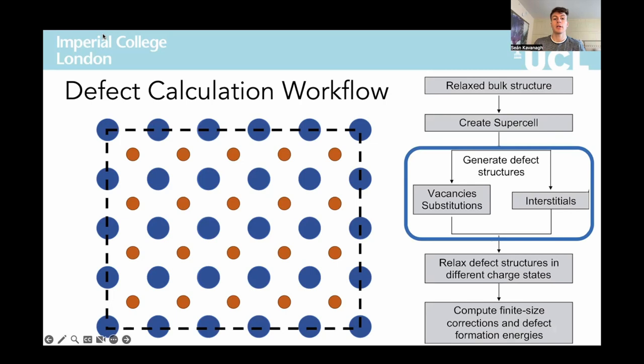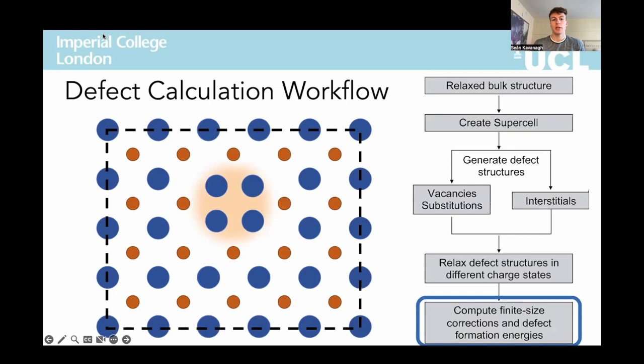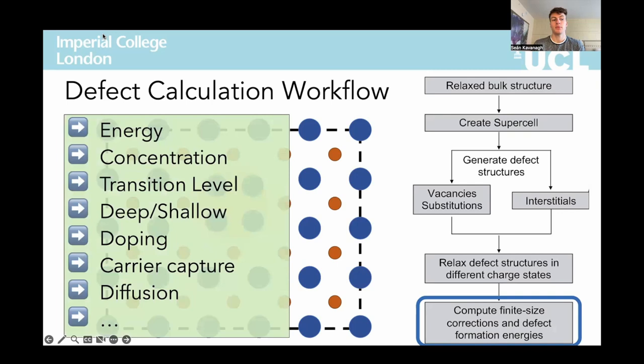For example, for a vacancy, we just remove one of these red atoms like this. We then allow this structure to relax using DFT or whatever other electronic structure method we want to use, giving us our final defect structure. With this final structure, we can calculate the formation energy, which in combination with the structure gives us all properties associated with the defect — for example, the concentration, the transition level position, etc. Essentially, from our final defect structure, we derive all properties associated with the defect.